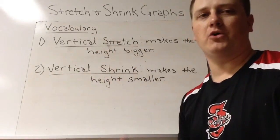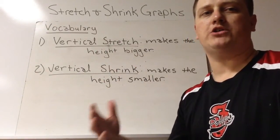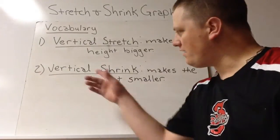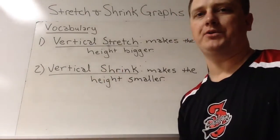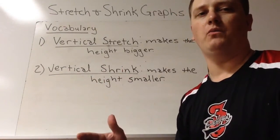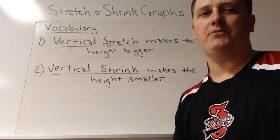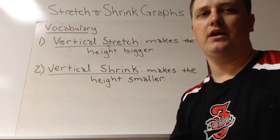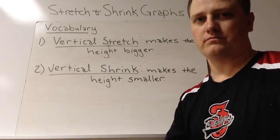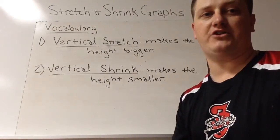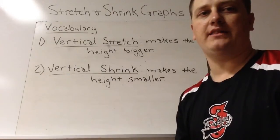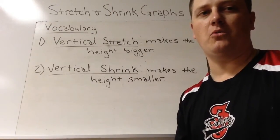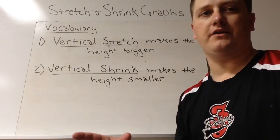Vertical stretch would be multiplying by a number larger than 1. Vertical shrink would be multiplying by a number smaller than 1. Negatives don't really matter. A negative 2 would still be a stretch because the negative actually causes reflection. We're just looking at the number; negatives and positives don't mean much in the stretch and shrink.